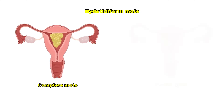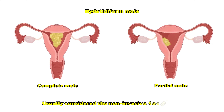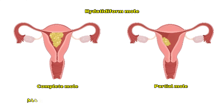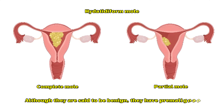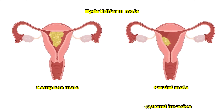Hydatidiform moles are categorized as complete and partial and are usually considered the non-invasive form of gestational trophoblastic disease. Although they are said to be benign, they have pre-malignant characteristics and can become malignant and invasive.